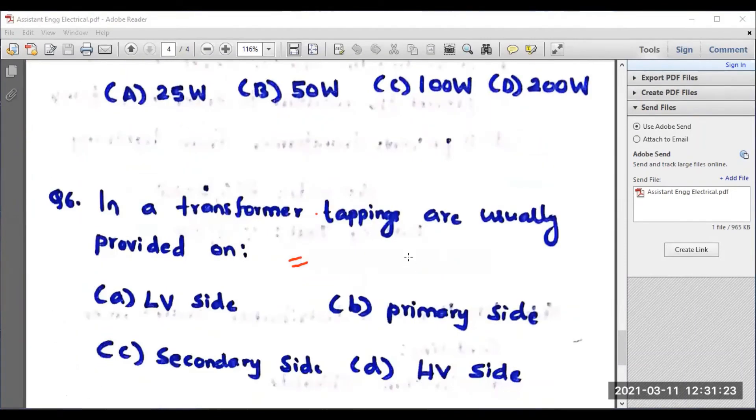Moving on to question number six: In a transformer, tappings are usually provided on LV side, primary side, secondary side, or HV side. Normally, the transformer tappings are provided at high voltage side. Option D is the correct answer for this question.